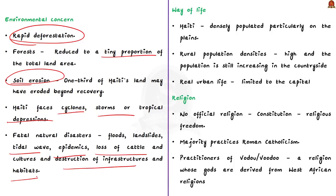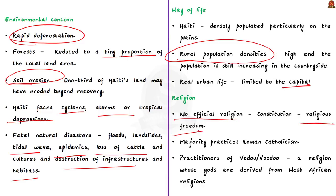Haiti is densely populated, particularly on the alluvial plains. It is still a rural country with high rural population density. Urban life is limited to the capital and 5 or 6 large towns. Regarding religion, Haiti has no official religion; its constitution allows religious freedom. However, more than half the population practices Roman Catholicism. They also practice Vodou, a religion whose gods are derived from West African religions.